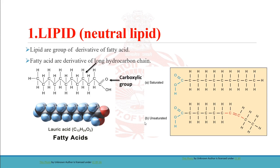In the saturated fatty acid structure, you can see the whole chain is made up of carbon and hydrogen with no double bond. If there is no double bond, the fatty acid is saturated. Unsaturated fatty acids have a double bond. In the structure you can see the double bond shown in red — so if a fatty acid has a double bond, it will be an unsaturated fatty acid.